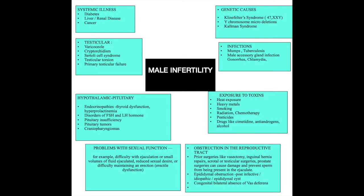Like the egg in the female, the sperm in the male is the gamete. It is responsible for fertilization of the egg so as to form the embryo or the baby eventually. The causes can be genetic causes like Klinefelter syndrome, which is a chromosomal abnormality, Y chromosome microdeletion, certain infections like mumps, tuberculosis, and genital tract infections.